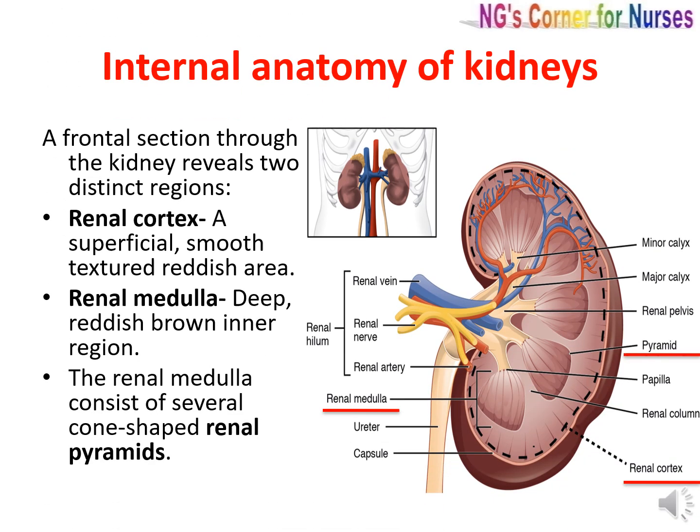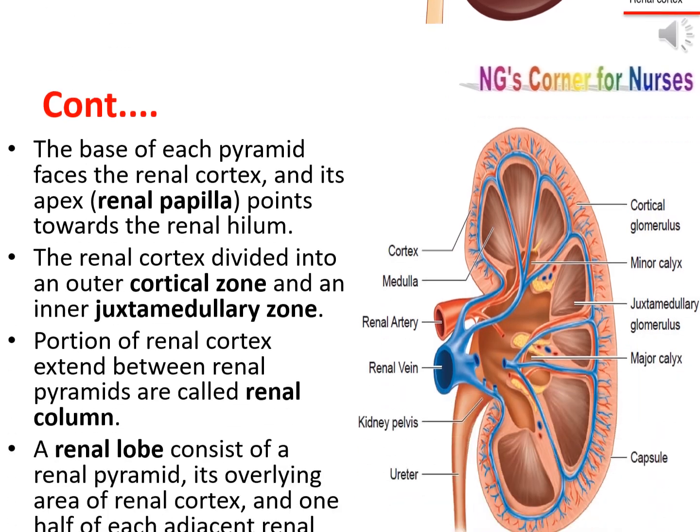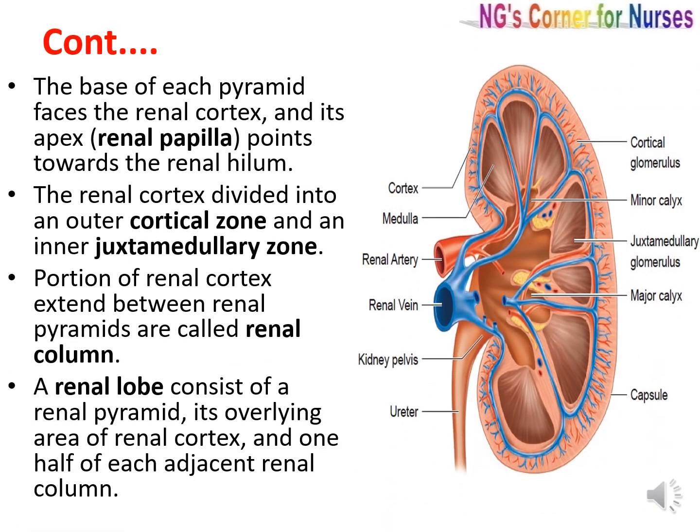Coming to the internal anatomy of the kidneys — a frontal section reveals two distinct regions. Please see the picture. First is the renal cortex, a superficial smooth-textured reddish area. Then the renal medulla, the deep reddish-brown inner region of the kidney, which consists of several cone-shaped renal pyramids. The base of each pyramid faces the renal cortex, and its apex — known as the renal papilla — points toward the renal hilum. The renal cortex is divided into an outer cortical zone and an inner juxtamedullary zone. The portions of renal cortex that extend between renal pyramids are called renal columns.